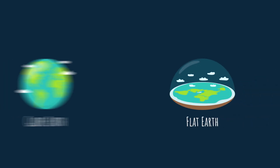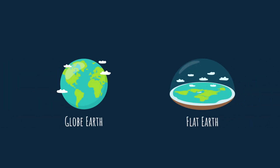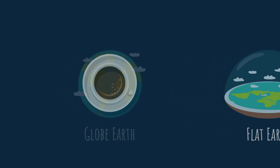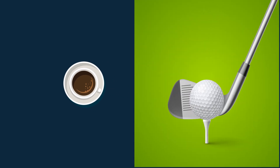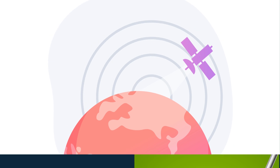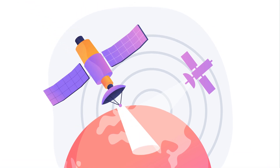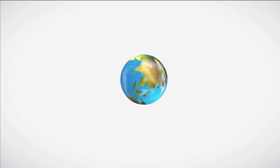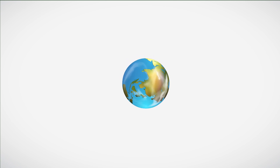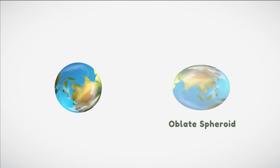Do you believe that Earth is flat or a sphere? Does it even matter to you? The flat Earth approximation actually works quite well in many aspects of our everyday life. We can order a cup of coffee or play a game of golf without worrying about the fine details of planetary shapes. But what if we want to launch a satellite into space? Now it's important to know whether the Earth is flat or spherical. But does the Earth really have a spherical shape? A closer look from space shows that Earth is not a perfect sphere, but an oblate spheroid.